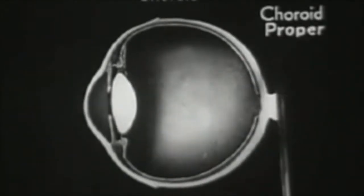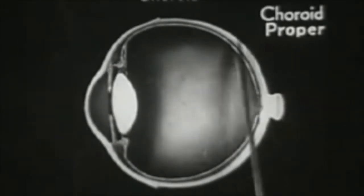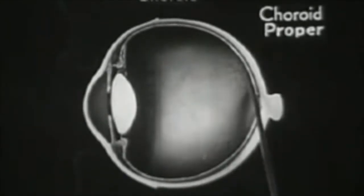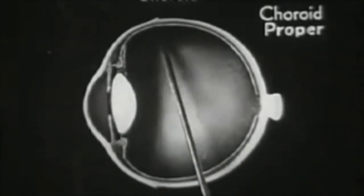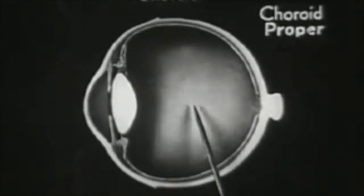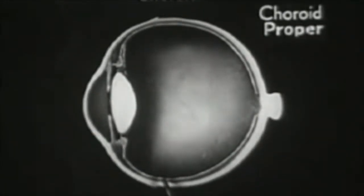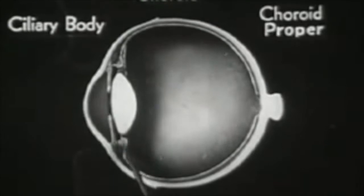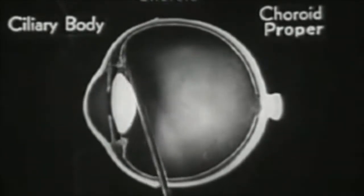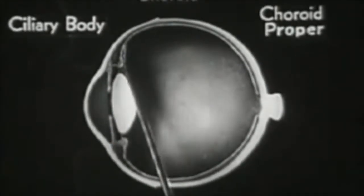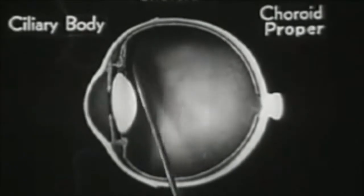The second layer is called the choroid. It consists of three different belts or zones. The first zone is called the choroid proper and is the part that carries nourishment to the tissues of the eye. The next zone is called the ciliary body, a broad ring-shaped band of thin muscle fibers which play a very active and vital part in the visual adjustment of the eye.